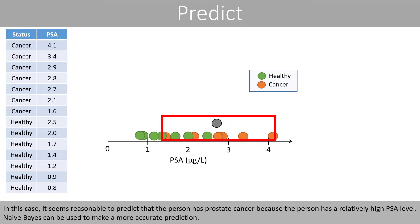In this case, it seems reasonable to predict that the person has prostate cancer because the person has a relatively high PSA level. Naive Bayes can be used to calculate a more accurate prediction.